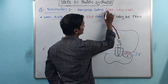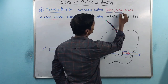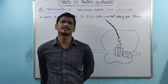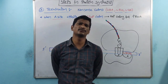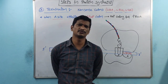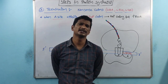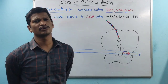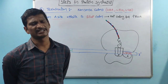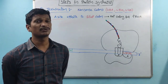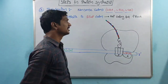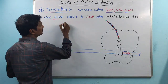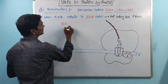Within prokaryotic cells, there are 3 nonsense codons. We know about the genetic code — totally 64 codons are there. Within 64 codons, 61 codons are sense codons and 3 codons are non-sense codons. 61 codons code for amino acids, and 3 codons are not codes for amino acids — they are codes for the releasing factors.